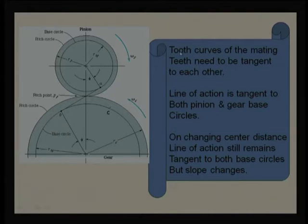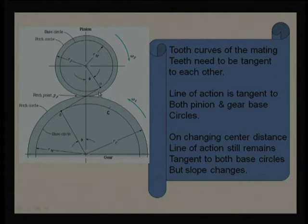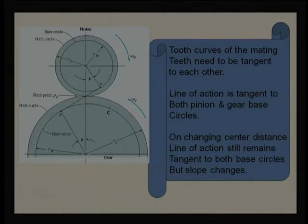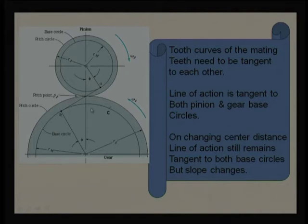The tooth curves of the mating teeth need to be tangent to each other. The tooth profile of the pinion should be tangent to the tooth profile of the gear — they cannot penetrate each other; otherwise, there will be excessive wear, damage, fracture, and bending, which we want to avoid. The line of action a–b is tangent to both the pinion base circle and the gear base circle.